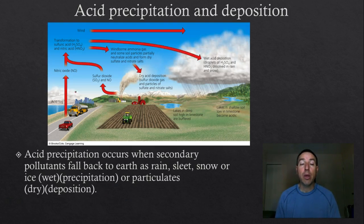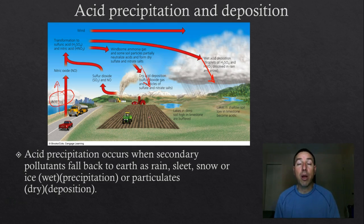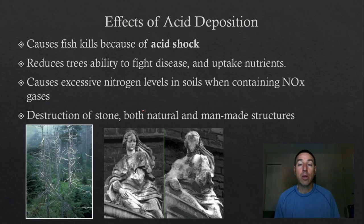How does acid deposition occur? We have pollutants like nitrogen oxides and sulfur dioxide combining with water in the atmosphere. As that water condenses and falls, rain normally has a slightly acidic pH, but adding these pollutants lowers the pH even more. You can have dry acid deposition from SO2 gas particles and sulfate and nitrate salts, and wet acid deposition from rain or snow. You can even have acidic fog — all of these are huge problems due to air pollution.